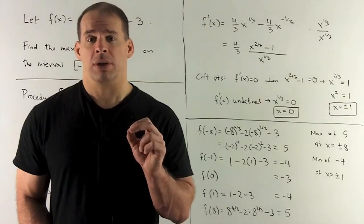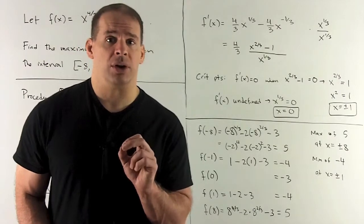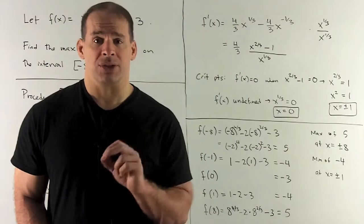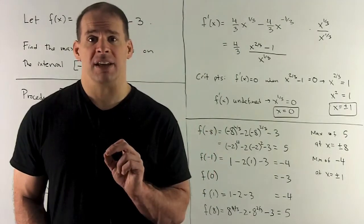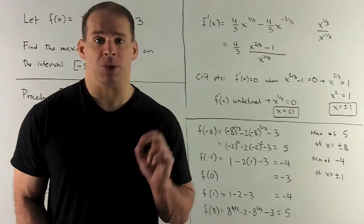To find where the critical points for the derivative equal to 0, we set the numerator equal to 0. So we're going to get x^(2/3) - 1 = 0, x^(2/3) = 1. Cubing both sides gives me x^2 = 1 or x = ±1.